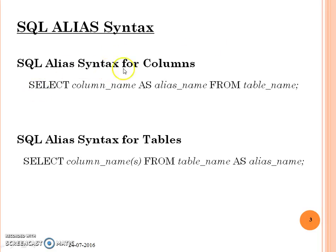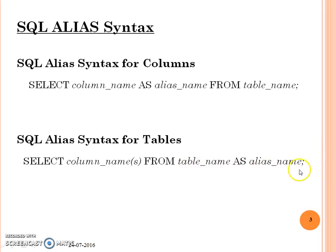To apply an alias to a column, the syntax is: SELECT column_name AS temporary_name FROM table_name. After executing the query, that temporary name is what we call the alias name. To give an alias to a table, the syntax is: SELECT column_name FROM table_name AS alias_name. So for a column it is column_name AS alias_name, and for a table it is table_name AS alias_name.